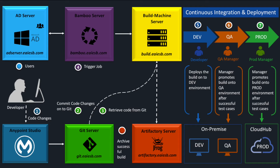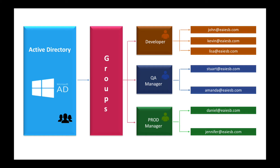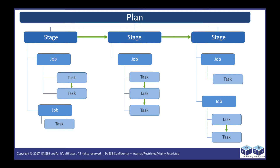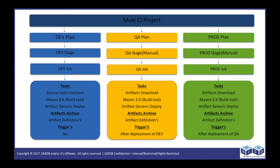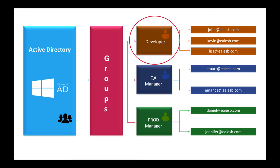Bamboo promotes the code from environment to environment. The Build Machine Server is where you design the environment. The Active Directory server maintains different groups and users, added to promote the code depending on their roles. Now we'll see how to implement continuous integration and continuous deployment for promoting a Mule demo project onto three environments through Bamboo. The first two — dev and QA — are on-premise environments, and the third, prod, is the CloudHub environment.